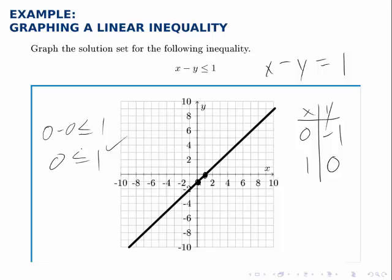So 0, 0 satisfies the inequality. It makes the inequality true. Therefore, we shade the side of the line that contains 0, 0, or the upper left-hand side.